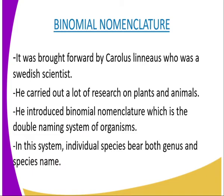For example, we can have the common cat, which is known as Canis familiaris. The Canis is referred to as the genus name, while familiaris is the species name. There are some rules which must be followed in binomial nomenclature. The first rule is that the generic name is written first, followed by the specific name. The second rule is that the first letter of the generic name must be a capital letter, and the rest are small letters. The specific name is written in small letters. The last rule is that the two names are underlined when handwritten, and written in italics when printed, as in books.